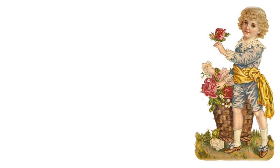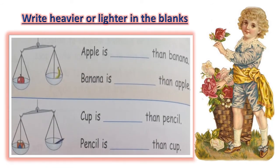Write heavier or lighter in the blanks. We learned that is, the pan of the balance which pan has heavier object, it goes downwards. And, which pan has lighter object, it goes upwards.